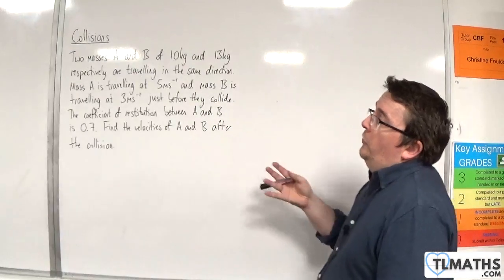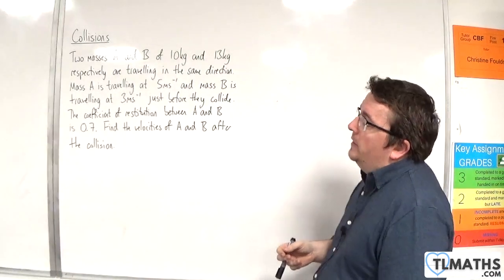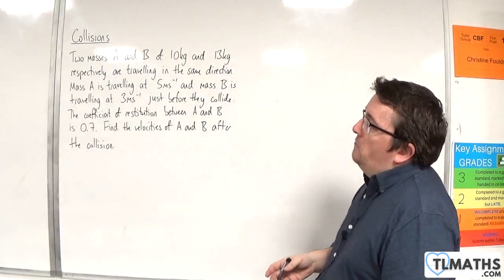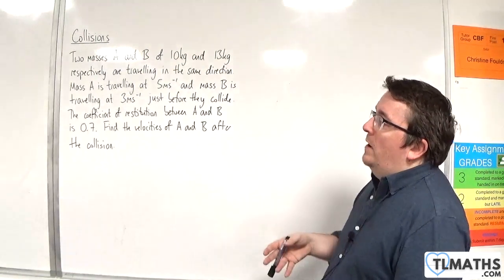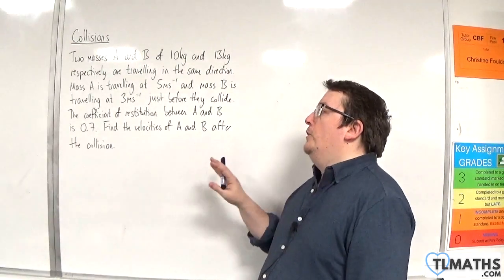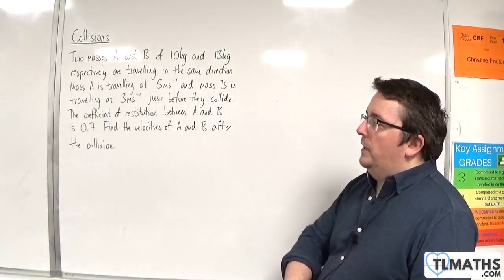In this example, we have two masses A and B of 10 kilos and 13 kilos respectively, traveling in the same direction. Mass A is traveling at 5 meters per second and mass B is traveling at 3 meters per second just before they collide. The coefficient of restitution between A and B is 0.7. Find the velocities of A and B after the collision.